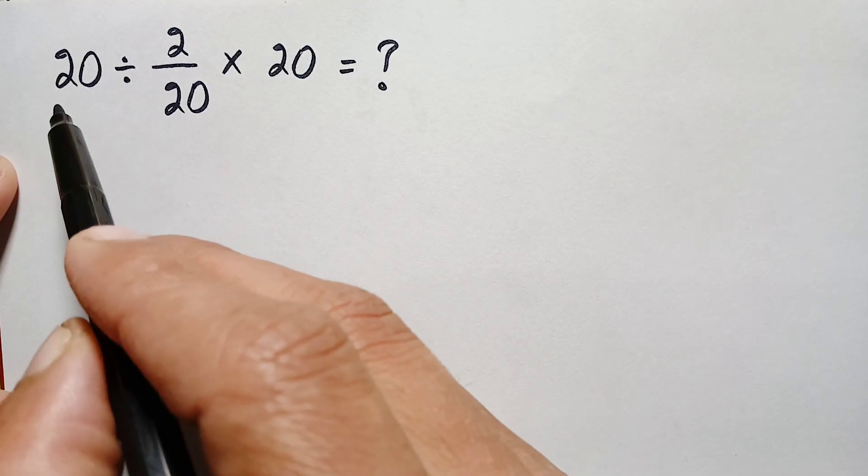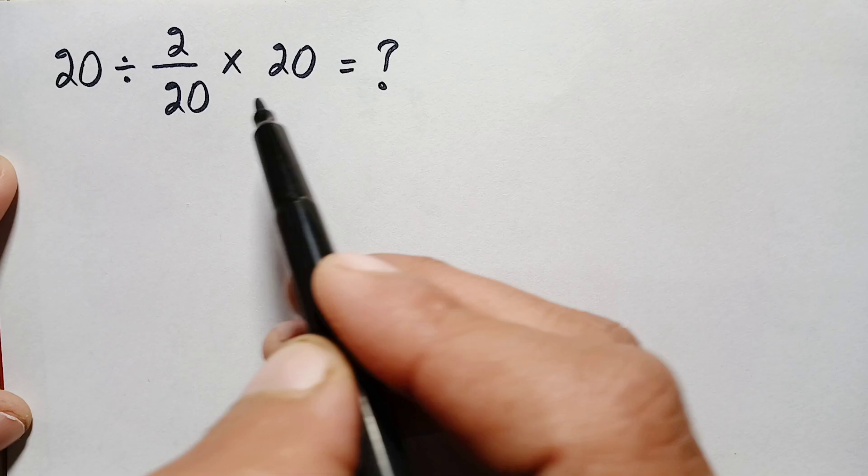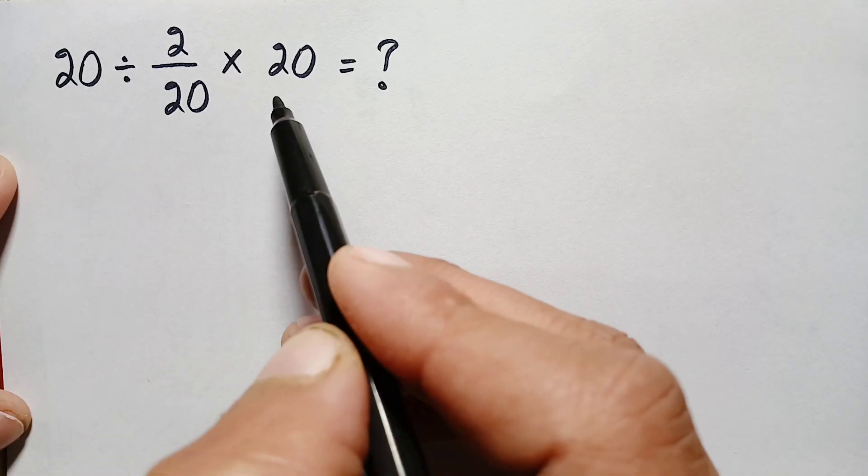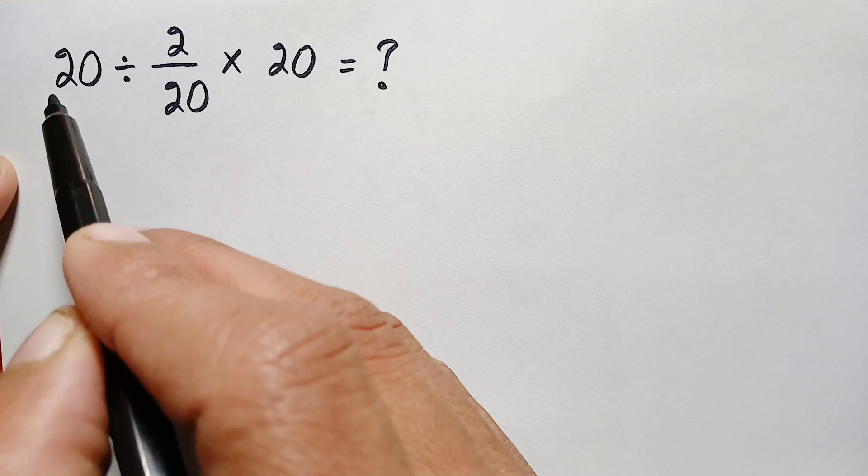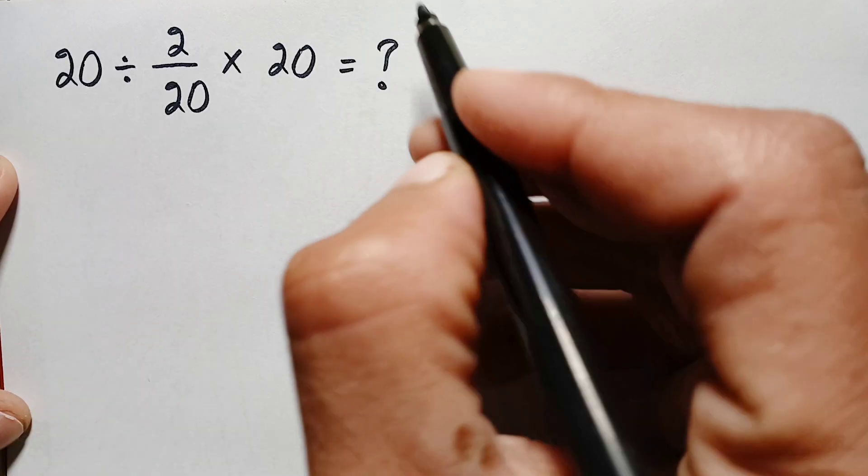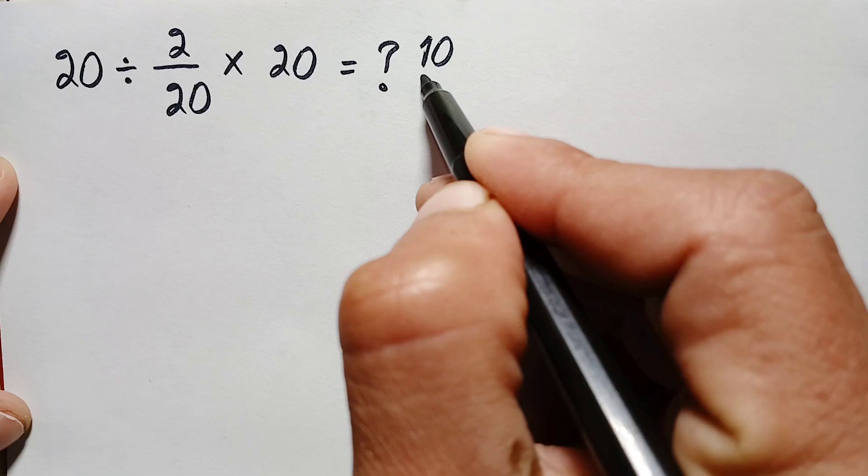What is the correct answer of 20 divided by 2 by 20 times 20? Now looking to the problem here, in this multiplication we can cancel 20 with 20 so this will become 2, and dividing 20 by 2 gives him 10. And here 10 is our answer. What do you think about this?